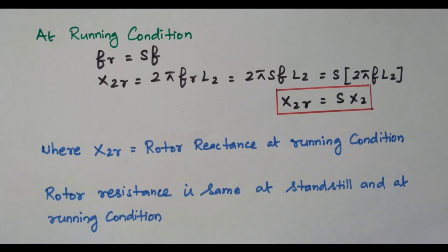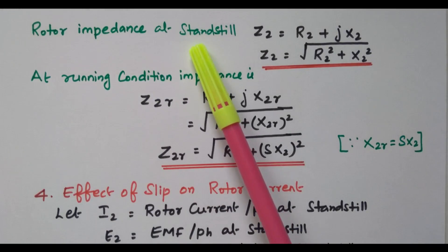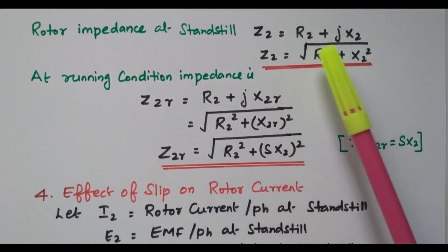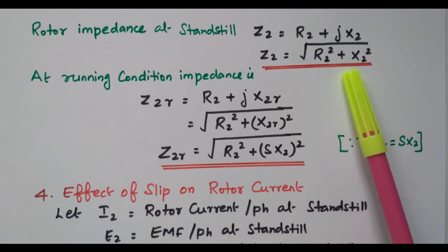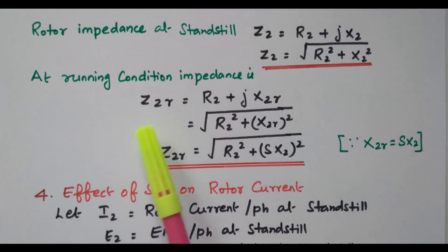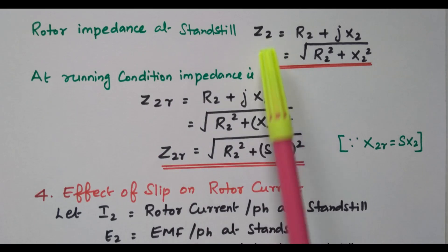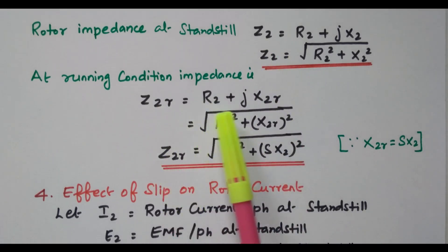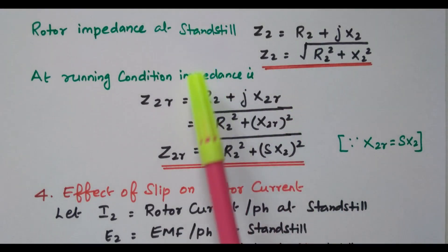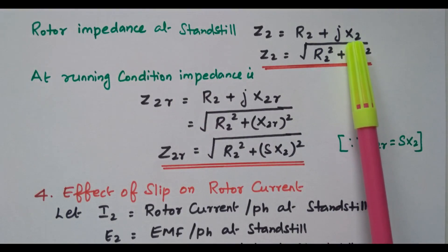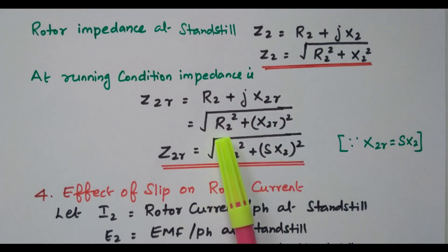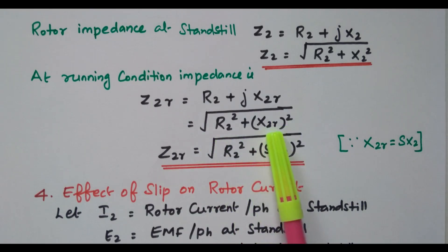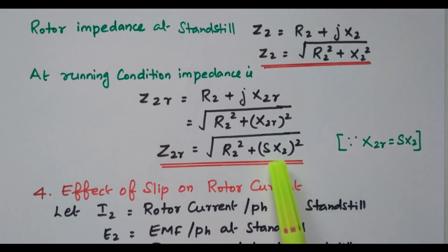Rotor impedance at standstill: Z2 = R2 + jX2, with magnitude √(R2² + X2²). Under running condition, Z2R = R2 + jX2R, where R2 is the same but reactance becomes X2R = S·X2. The magnitude is √(R2² + (S·X2)²). So rotor impedance under running condition depends upon the slip of the induction motor.